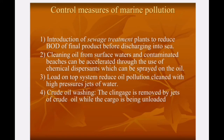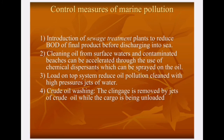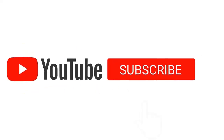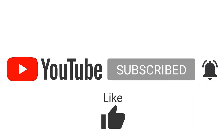Control measures of marine pollution: First, introduction of sewage treatment plants to reduce BOD — biochemical oxygen demand — of the final product before discharging into the sea. Second, cleaning oil from surface water and contaminated beaches can be accelerated through the use of chemical dispersants, which can be sprayed on the oil. Third, the load-on-top system to reduce oil pollution, cleaned with high-pressure jets of water. Fourth, crude oil washing — the clinage is removed by a jet of crude oil while the cargo is being unloaded. These are the main control measures of marine pollution.